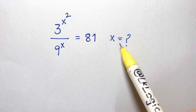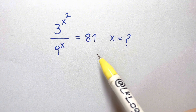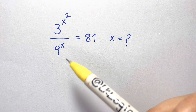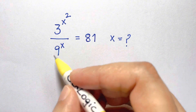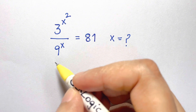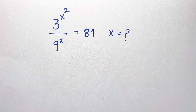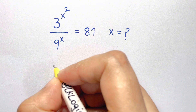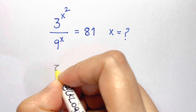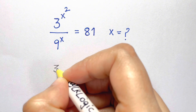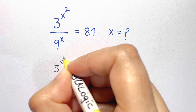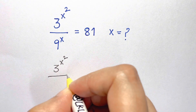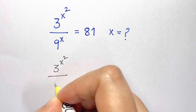What we are going to do is first split 9 as 3 squared. So we're going to write it like this: first we have 3^(x²) over 9, which can be written as 3 squared, raised to x, which is equal to 81.